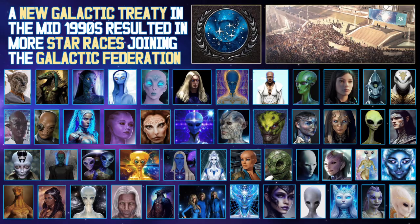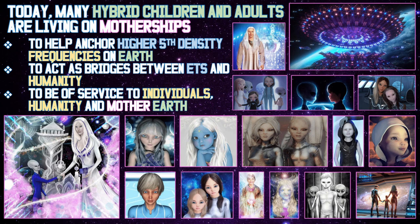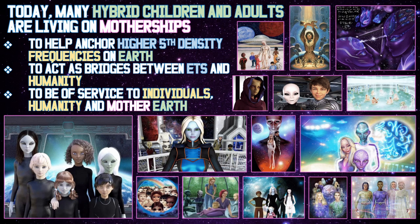A new galactic treaty in the mid-1990s resulted in more star races joining the Galactic Federation. Star races that had made self-serving deals with secret Earth groups stopped cooperating. In 1995, Zetas successfully completed their DNA and hybridisation programs. Today, many hybrid children and adults are living on motherships, and some are living on Earth. Hybrids indicate that their purpose is to help anchor fifth-density frequencies on Earth, to act as bridges between ETs and humanity, and to be of service to individuals, humanity and Mother Earth.